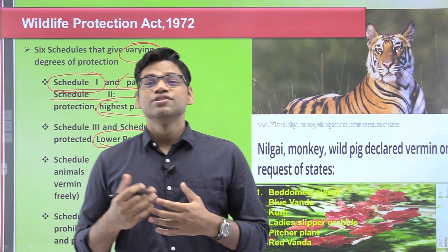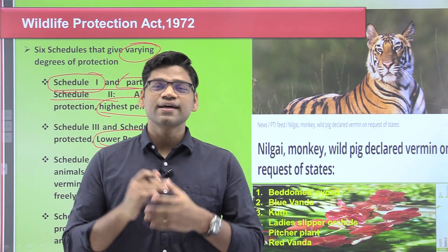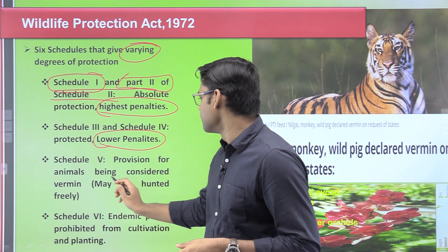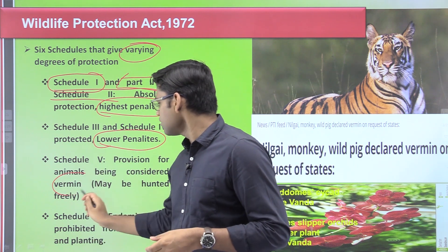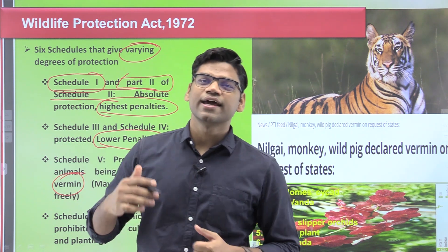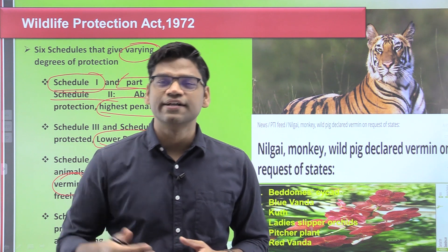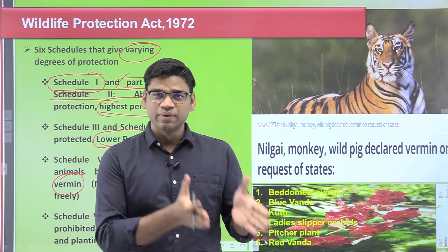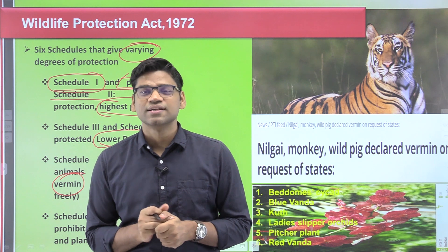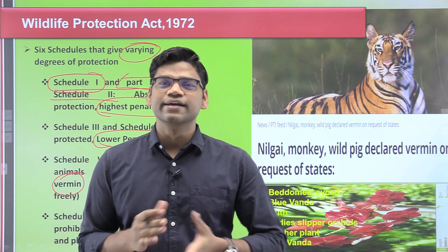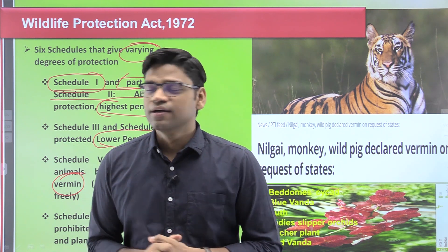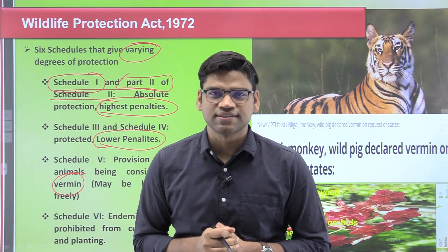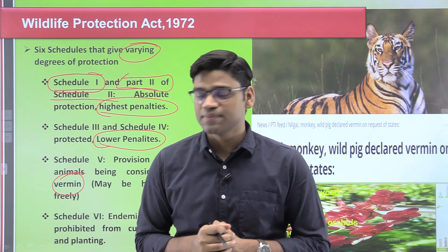Schedule 5 talks about the animals that are declared vermin. Vermin are those species that can be legally hunted. If a particular government puts animals in the vermin list, then these animals can be legally hunted and the penalties will not be attracted to those actions.